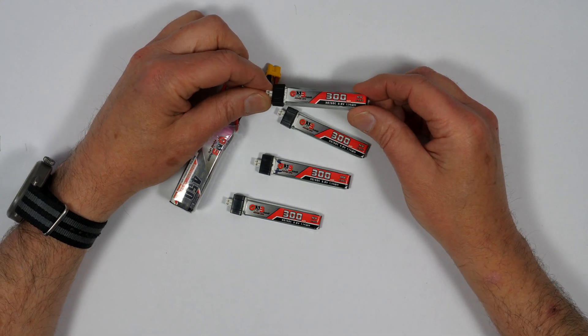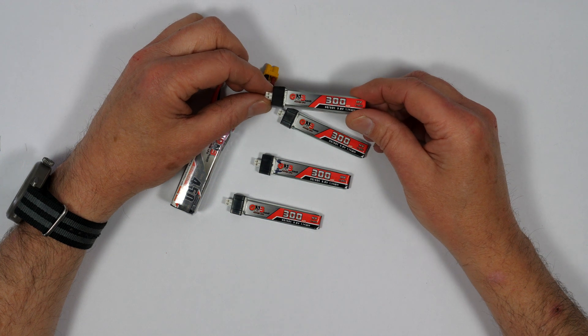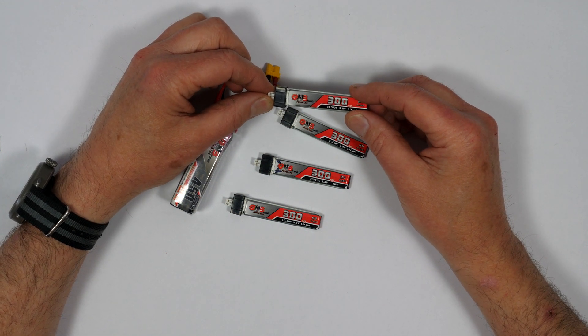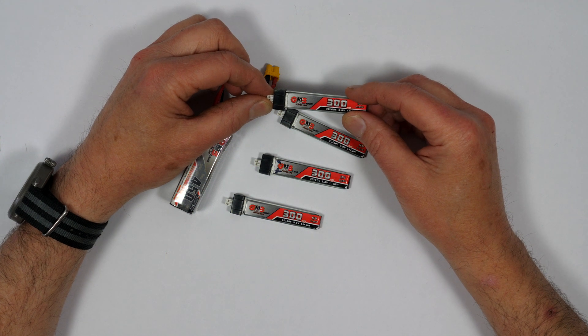But more importantly, they don't like being left for long periods at either full or low charge. A LiPo is happiest when it's at about 3.85 volts if it's not being used. This is known as storage charge or storage state.